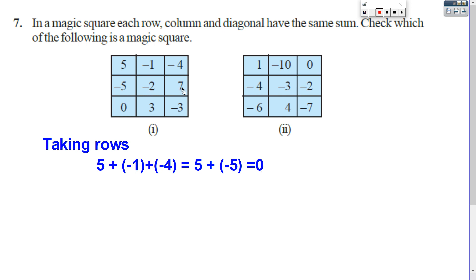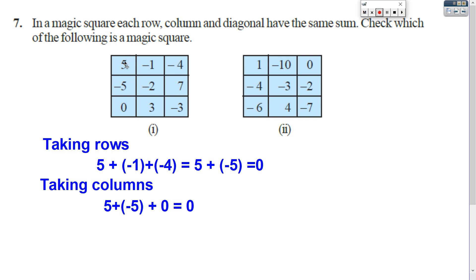Similarly, you have to do negative 5 plus negative 2 plus 7, and 0 plus 3 plus negative 3. Then after completing that, you have to take columns. Column means: first column is 5, negative 5, 0; next column is negative 1, negative 2, 3; and negative 4, 7, negative 3. Taking the first column: 5 plus negative 5, different sign, 5 minus 5 is 0, then 0 plus 0, you get 0. Similarly add negative 1 plus negative 2 plus 3, and negative 4 plus 7 plus negative 3. Add the same sign first, then different sign to find the sum.